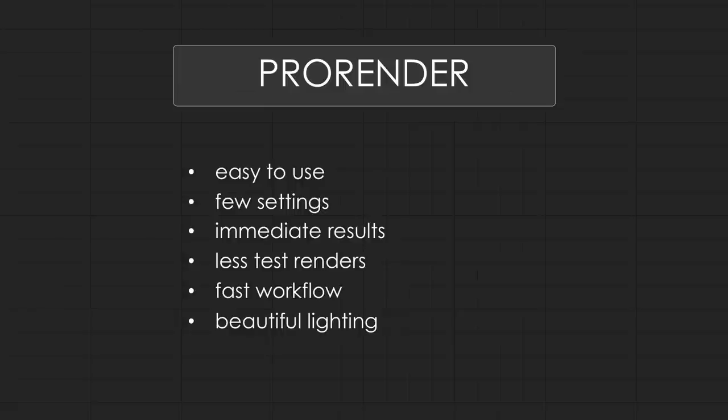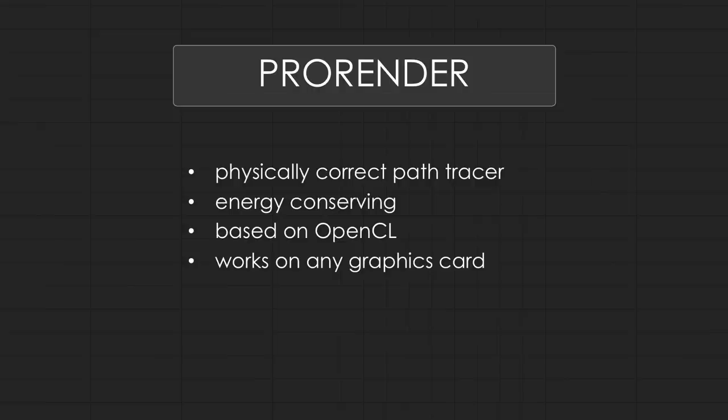You have beautiful lighting immediately because from a technical point of view ProRender is a physically correct path tracer, which means things like global illumination or caustics — stuff that with the standard and physical renderer you had to activate separately — you get here basically for free, immediately. Another advantage is that ProRender is based on OpenCL, which means it works on basically any graphics card. It's developed by AMD and integrated by Maxon, but it doesn't require a specific graphics card like other renderers do.